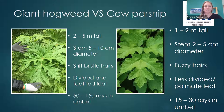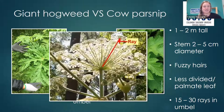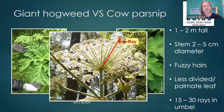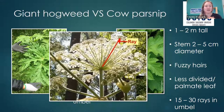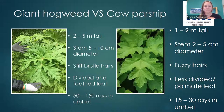At first glance, a lot of people think cow parsnip is giant hogweed. In giant hogweed there are 50 to 100 rays in the umbel, whereas in cow parsnip there are only 15 to 30 rays. The ray is the part that connects the central stalk to the secondary umbel.